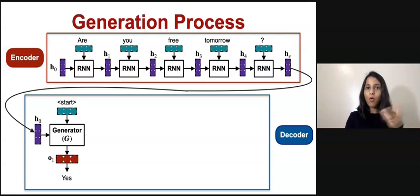The decoder is given start token at the first time step as an input, and the generator produces an output state o_1. o_1 is then projected over the vocabulary space, followed by the softmax function and the argmax function to generate the token yes.